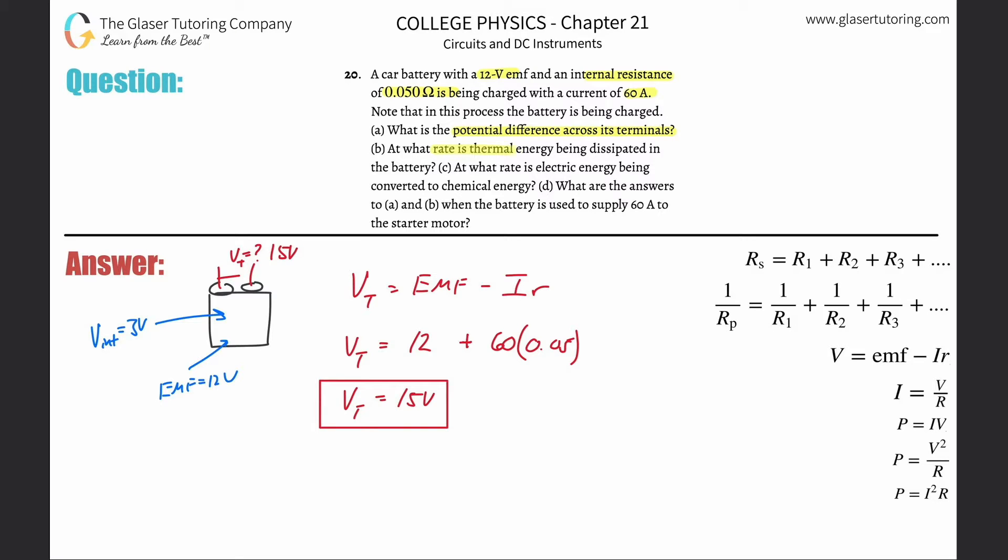So letter B. At what rate is thermal energy being dissipated in the battery? So thermal energy, what we have to think about here is it says thermal energy being dissipated in the battery. So we want to then consider from the perspective of inside of that battery, right? So let's write it on over here. So if we take the internal perspective, then we realize that the current flowing through the insides of the battery is going to be 60 amps, right? And the internal resistance is then going to be, as they told us, 0.05 ohms.